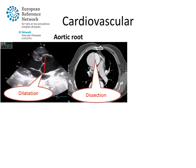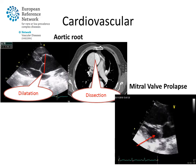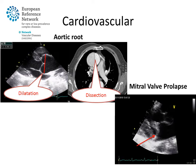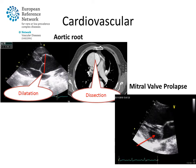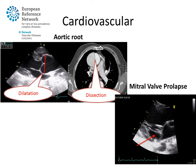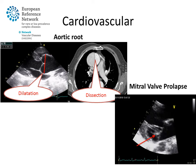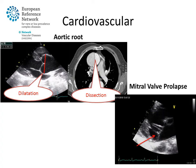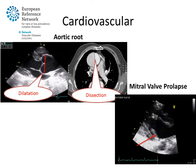Another typical cardiovascular manifestation of Marfan syndrome is mitral valve prolapse, where the valve between the left atrium and left ventricle is typically too thick and too mobile. Mitral valve prolapse may induce regurgitation of the valve and eventually lead to heart failure.